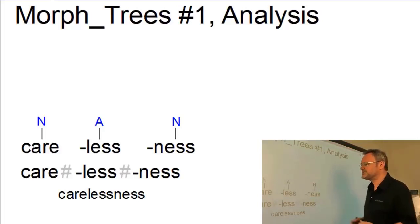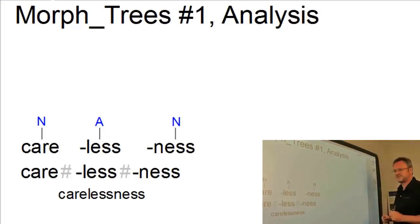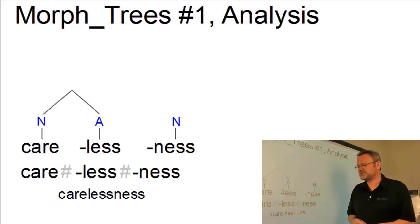So now we can start with the base form, which is care, and combine it with an affix to its left or right. That results in a suitable word form. If you're not sure whether such a form exists, you can always consult corpora, such as the British National Corpus. So the only affix which we can find to the right of care is careless. In other words, this is the branching structure.